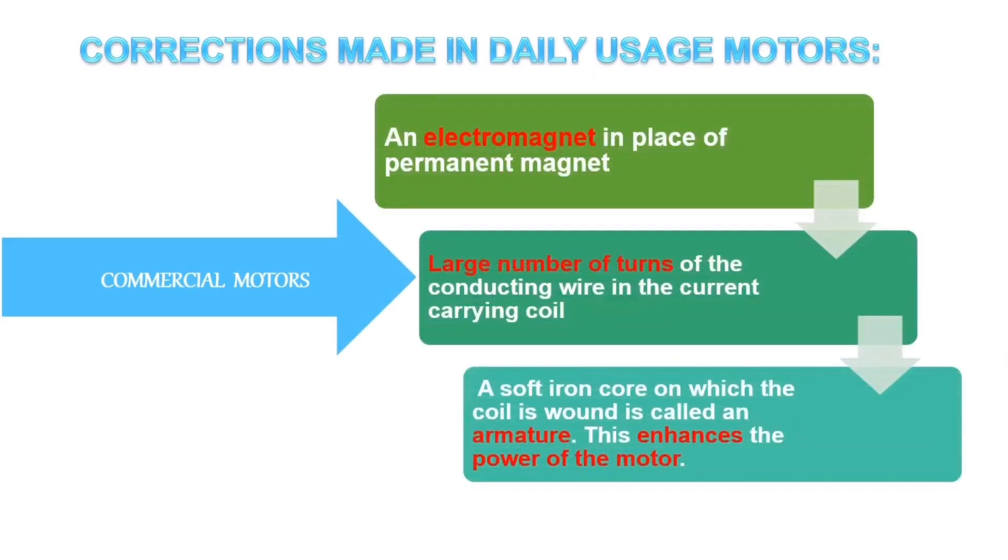These are all the corrections made in daily usage motors, that is, commercial motors. An electromagnet in place of a permanent magnet, large number of turns of the conducting wire in a current carrying coil, and a soft iron core is inserted inside the coil. A soft iron core on which a coil has been bounded is called an armature. Why all these changes are made? All these changes are made for a commercial motor in order to enhance its power.